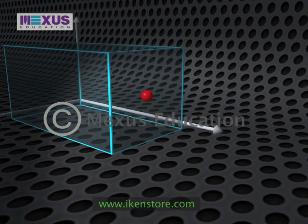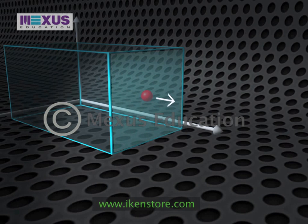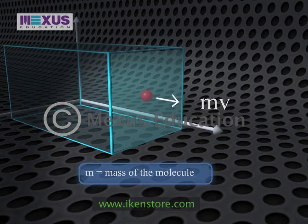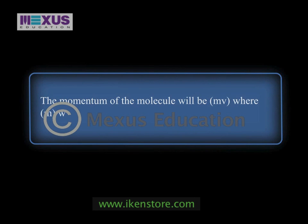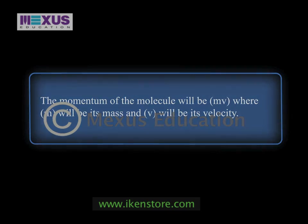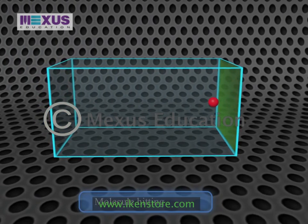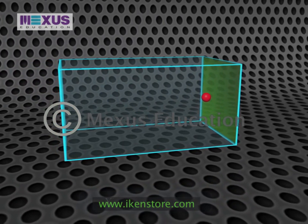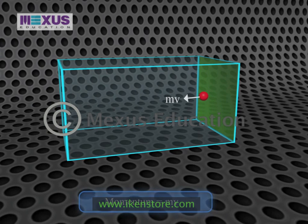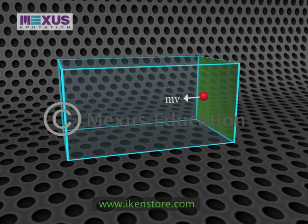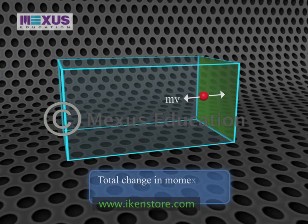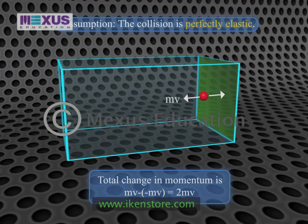If the molecule freezes for a few moments just before it hits the right-hand face of the box, the momentum of the molecule will be MV, where M is its mass and V is its velocity. If it rebounds elastically from the end of the box, its momentum will be MV but in the opposite direction. Since momentum is a vector quantity, the change in momentum will be MV − (−MV), which is 2MV. Note that we are making an assumption that the collision is perfectly elastic.